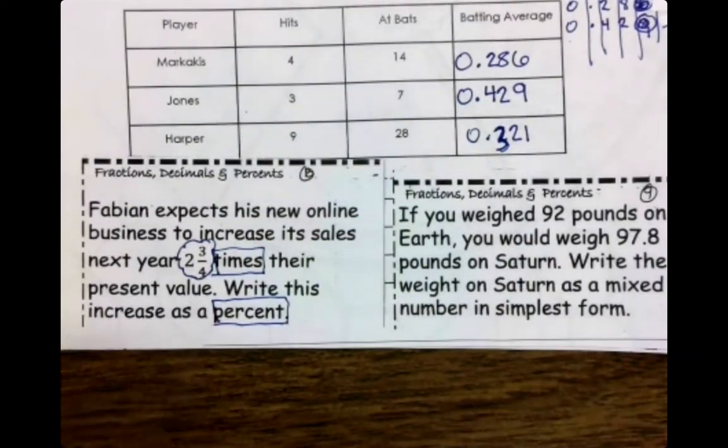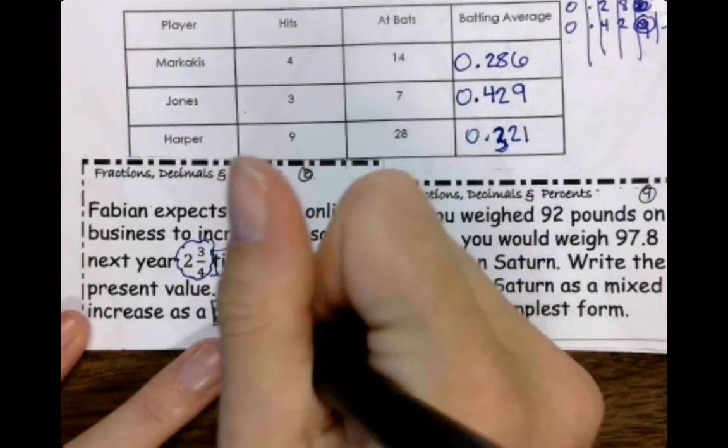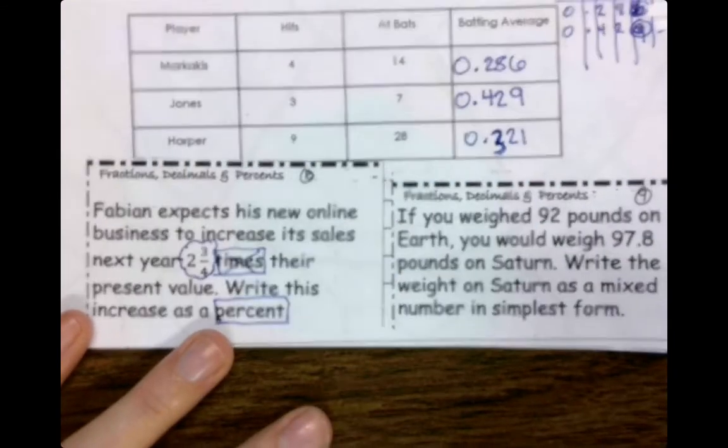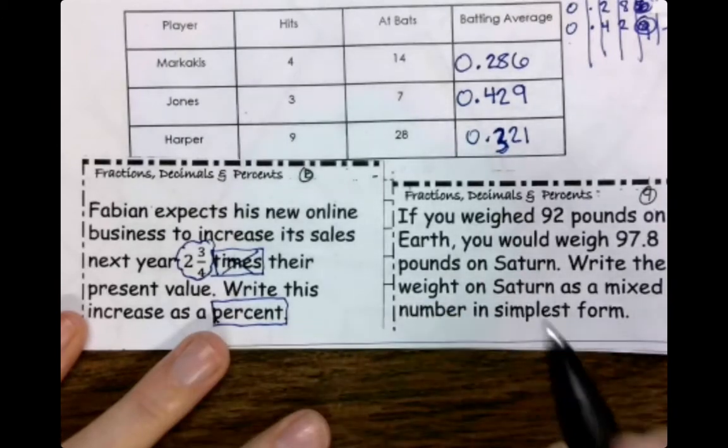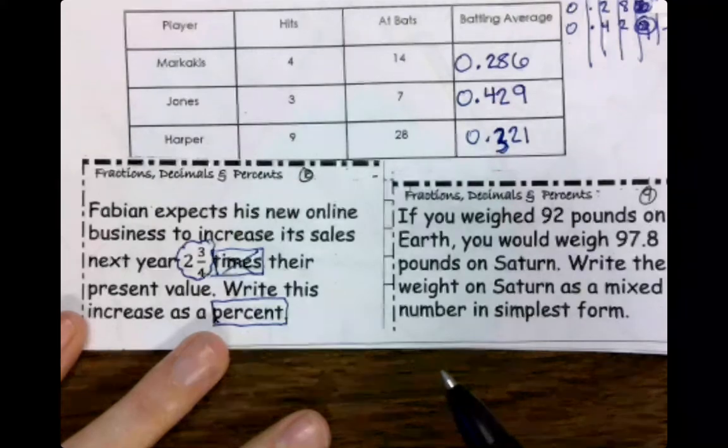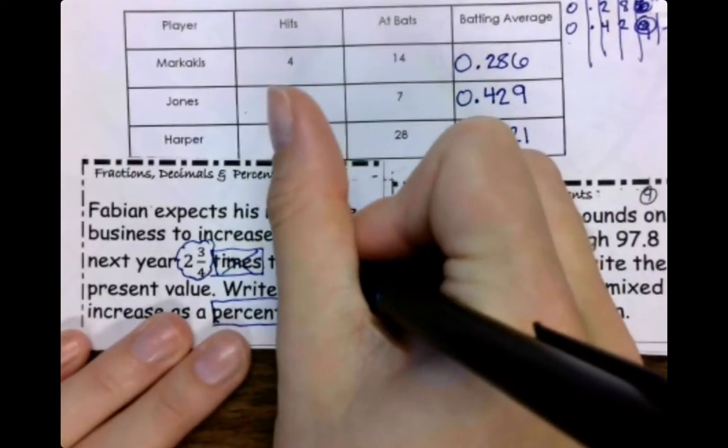Okay, we got our keywords, we got our numbers circled. For this particular problem, since we're writing it as a percent, we probably don't need the times. So again, some of you will be able to look at this and figure it out very quickly. Some of us will need an extra second. So let's write it as a decimal first.